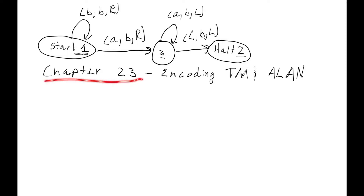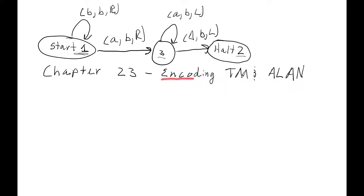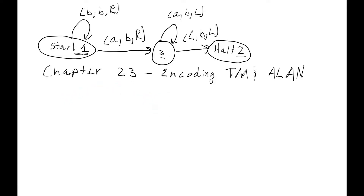Welcome to Chapter 23, Part B. We're going to talk about encoding a Turing machine and the language Allen. Encoding a Turing machine means taking one of these Turing machines and converting it into a string that represents it. We'd want to use that string as input into another Turing machine so that that Turing machine can maybe answer questions about other Turing machines.